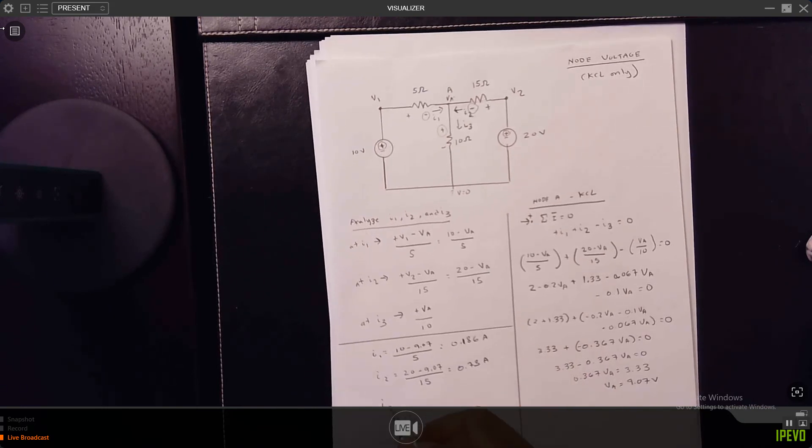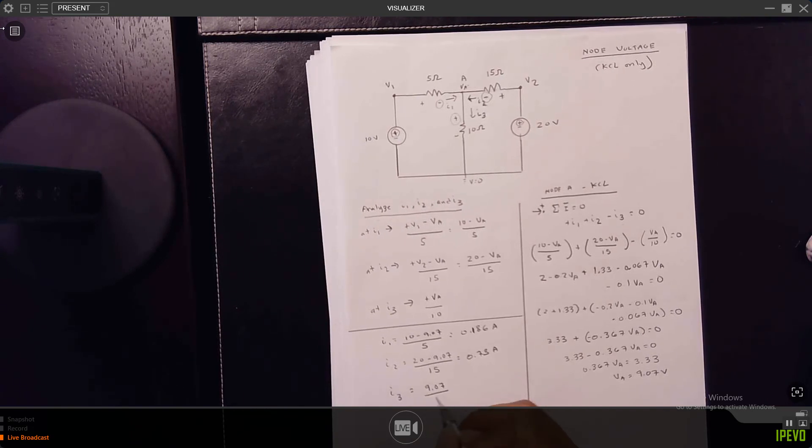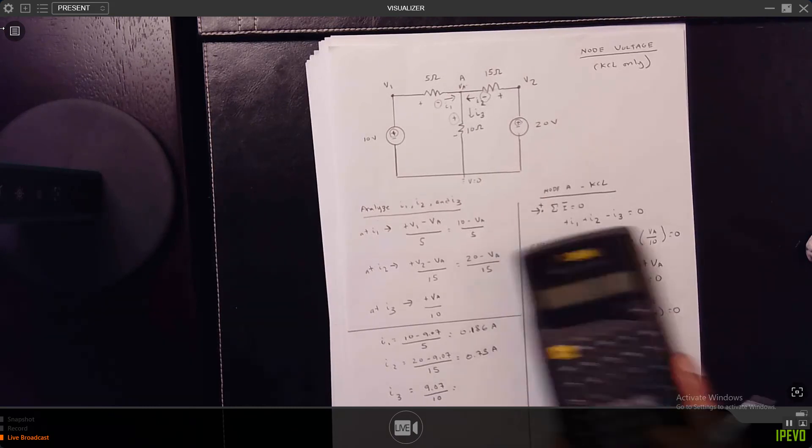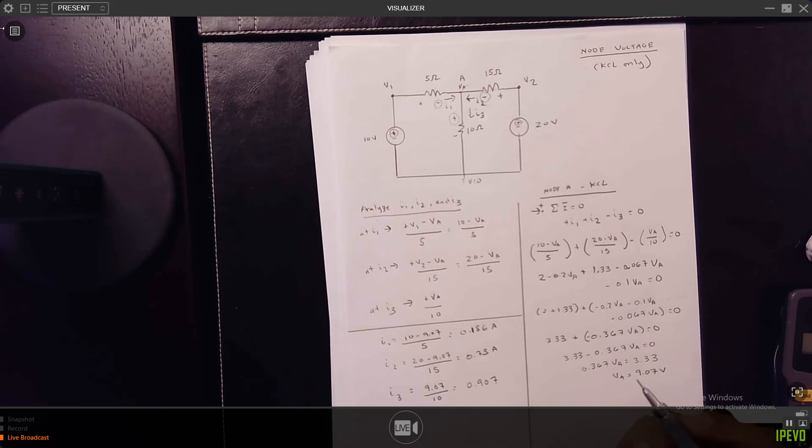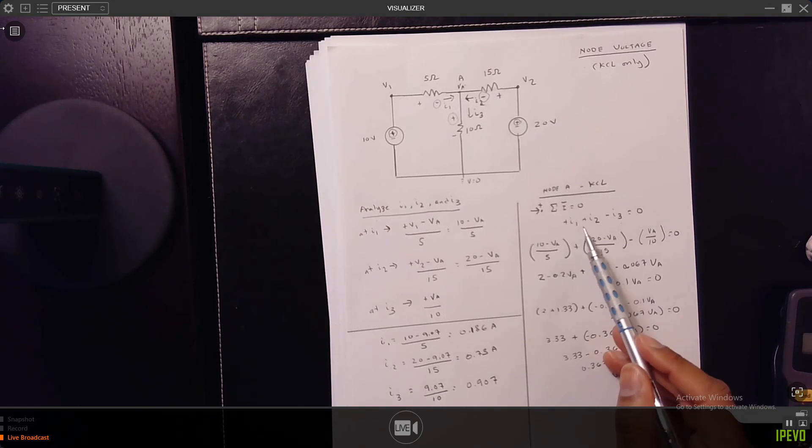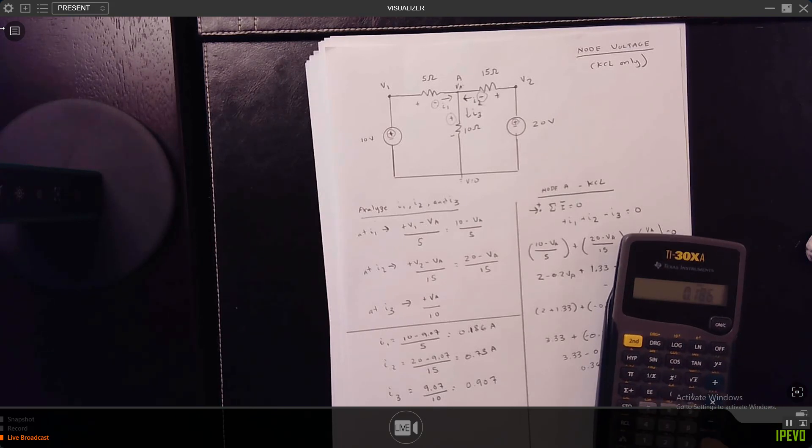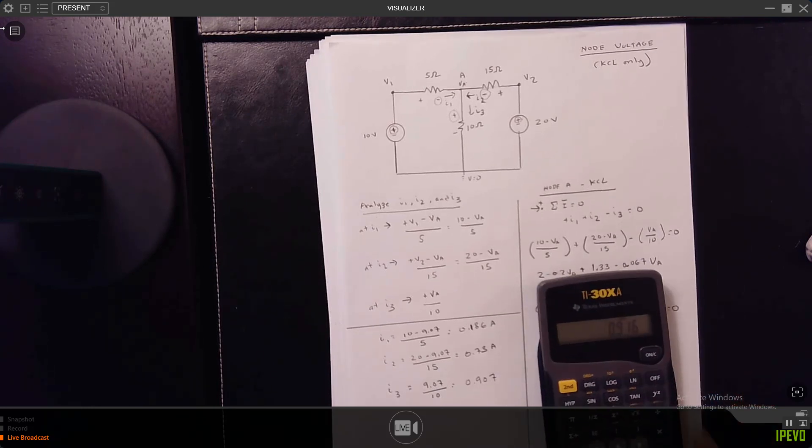I3 is VA, which is 9.07 over 10. This is equal to 0.907. And you see that these numbers come out - if I add I1 and I2 I should get 0.907. So if I type in 0.186 plus 0.73, I get 0.916 and 0.907, there's going to be slightly off but this is very close number you can go ahead and accept this number. So that's how you do node voltage.